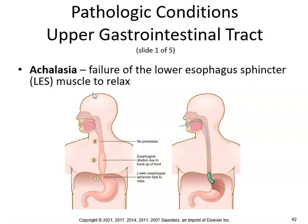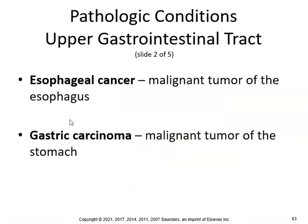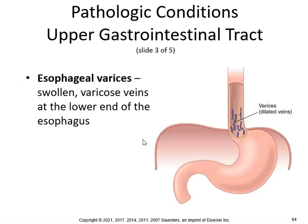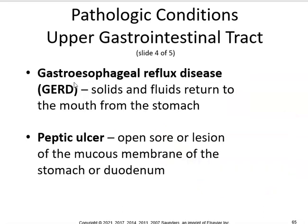Achalasia is failure of the lower esophagus muscles to relax, so you might get acid reflux. Esophageal cancer — bad news — malignant tumor of the esophagus. Gastric carcinoma is a malignant tumor of the stomach. Esophageal varices are swollen varicose veins at the lower end of the esophagus. GERD is gastroesophageal reflux disease — solids and fluids return to the mouth from the stomach. Peptic ulcer — open sore or lesion of the mucous membranes of the stomach or duodenum.